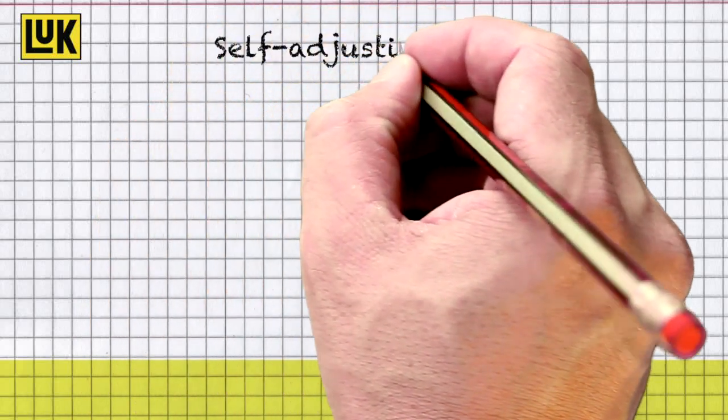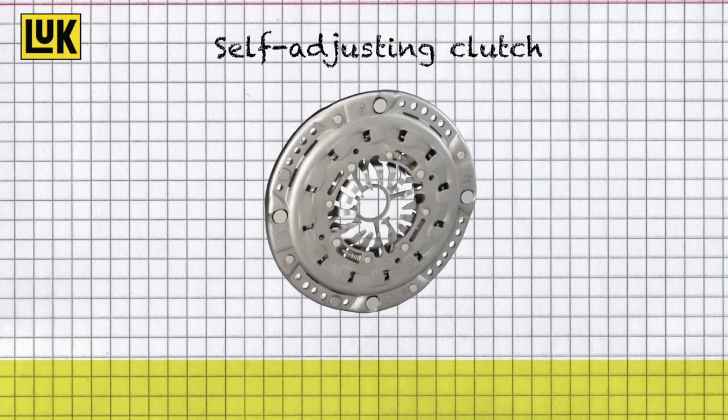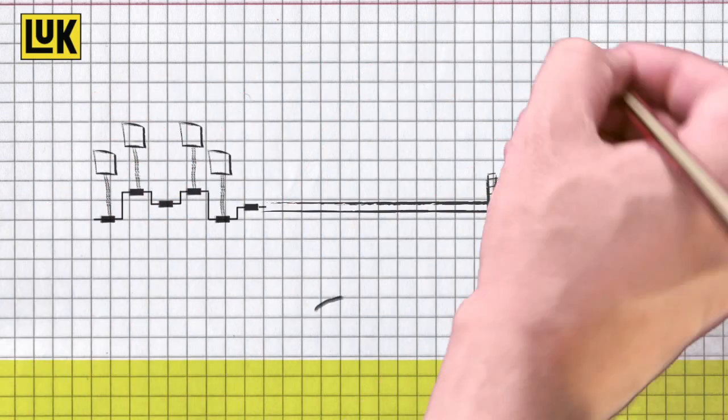What exactly is a LUKE self-adjusting clutch? The clutch is positioned between the engine and the gearbox and controls the transmission of power.